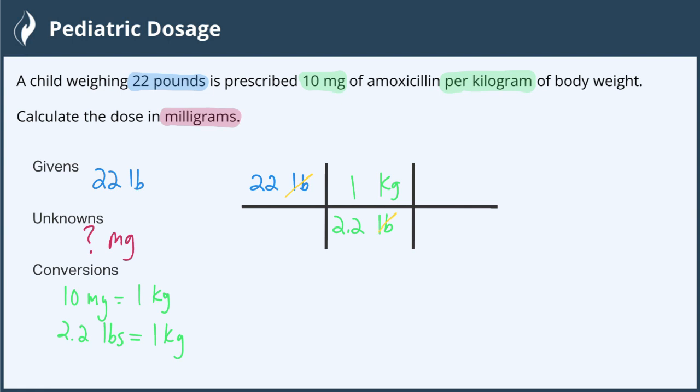Now we have it in terms of kilograms. We're going to be able to say, well, 1 kilogram of body weight is equal to 10 milligrams of the medicine.